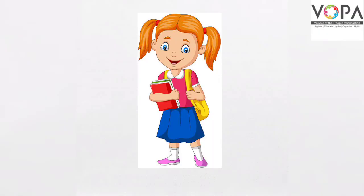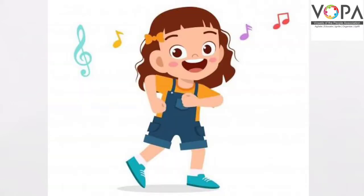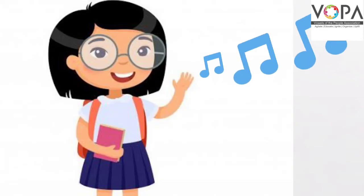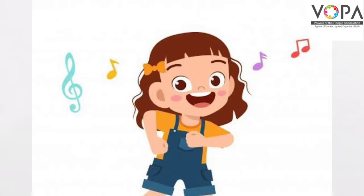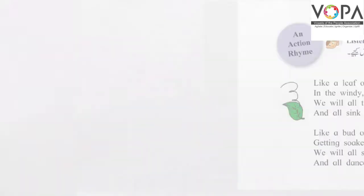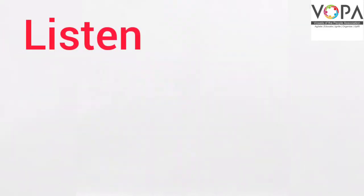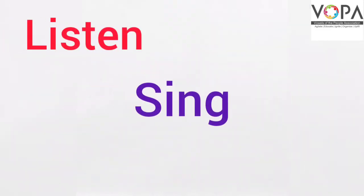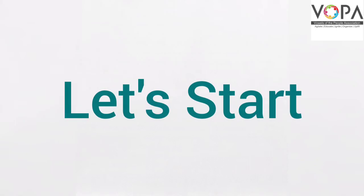Some poems we just sing, but some of them we can sing as well as enact. Kuch nazmoon ko hum sirf ga sakte hain, lekin kuch nazmoon ko hum gaane ke saath saath harakat wa saknaat bhi kar sakte hain. So, the first instruction given here is: Listen, sing and enact. Aapko is nazm ko bahut hi gaur se sunna hai. Chaliye, let's start.